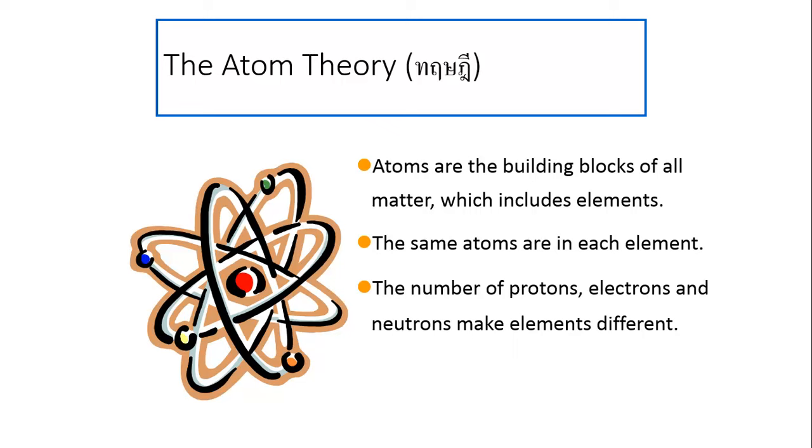This is the atom theory. You don't have to write this down. Atoms are the building blocks of all matter, which includes elements. The same atoms are in each element. And the number of protons, electrons, and neutrons make elements different.